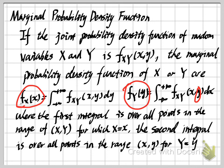In this video, I only covered the joint probability distribution for a pair of continuous random variables. If you're interested in the joint probability distribution for discrete random variables or for more than two random variables, you can leave a comment below and I may upload videos on those topics. This video covered joint probability functions and distributions. In the next video, I want to talk about conditional probability distributions for more than one or two random variables. Please subscribe to this channel, and see you in the next video. Thank you.